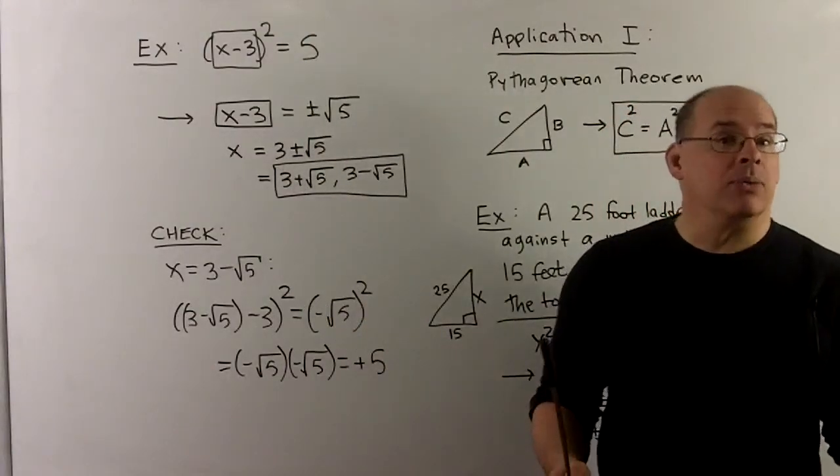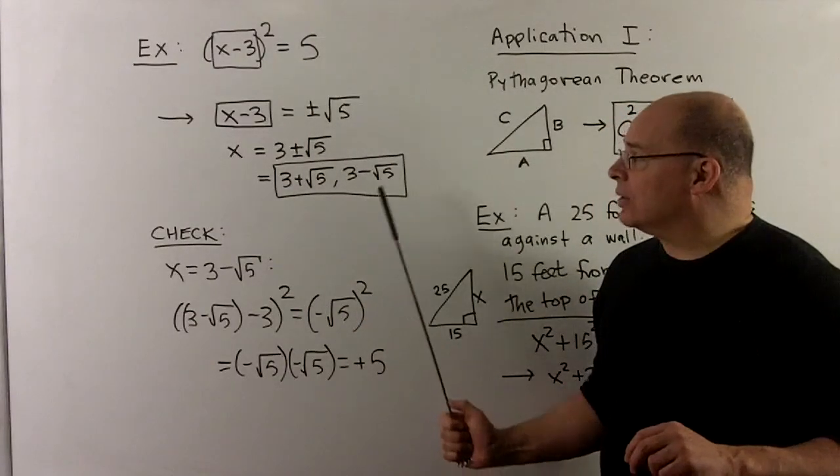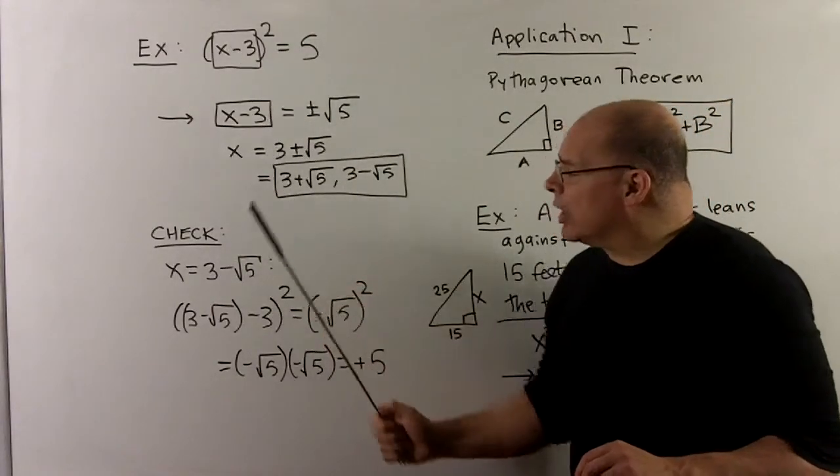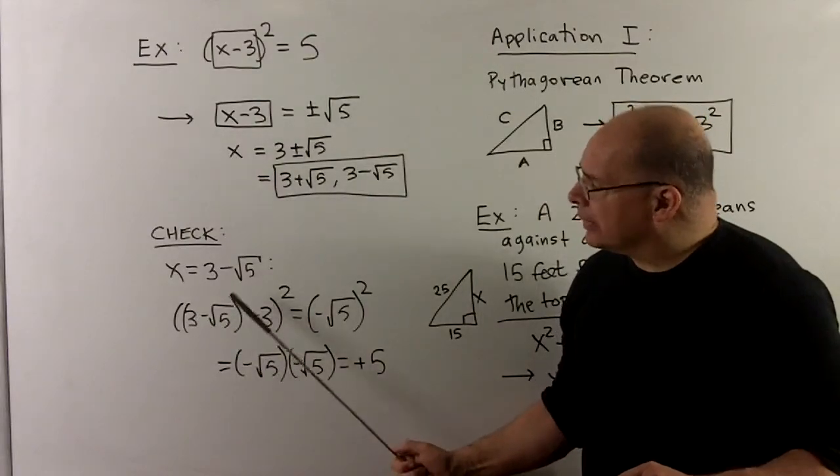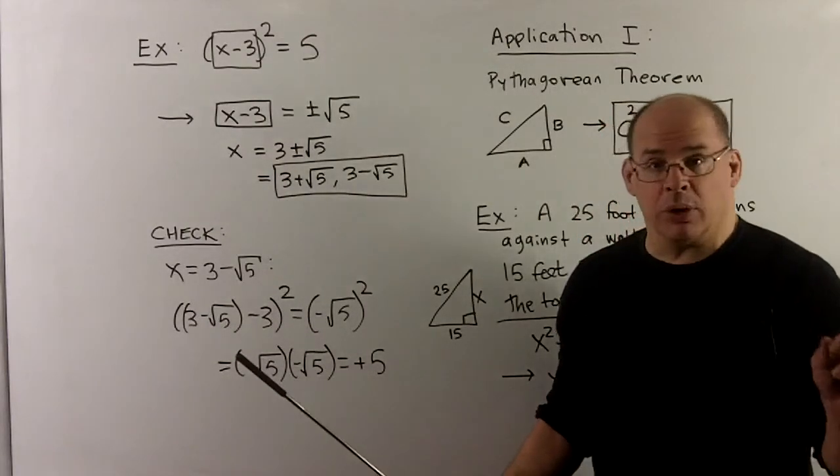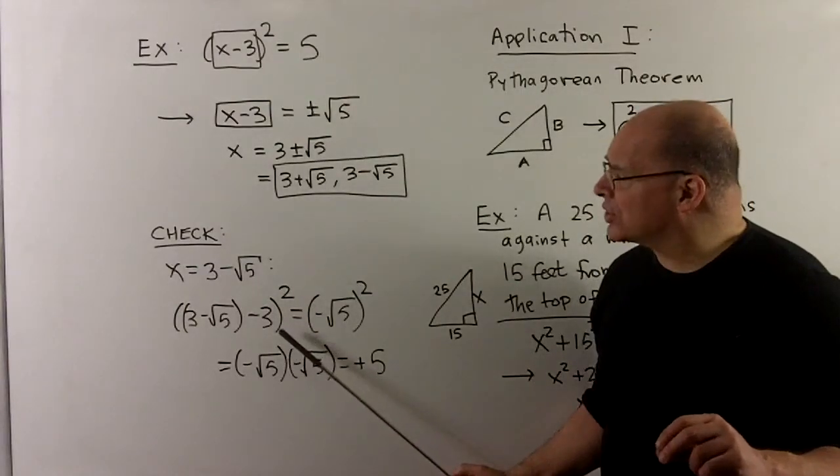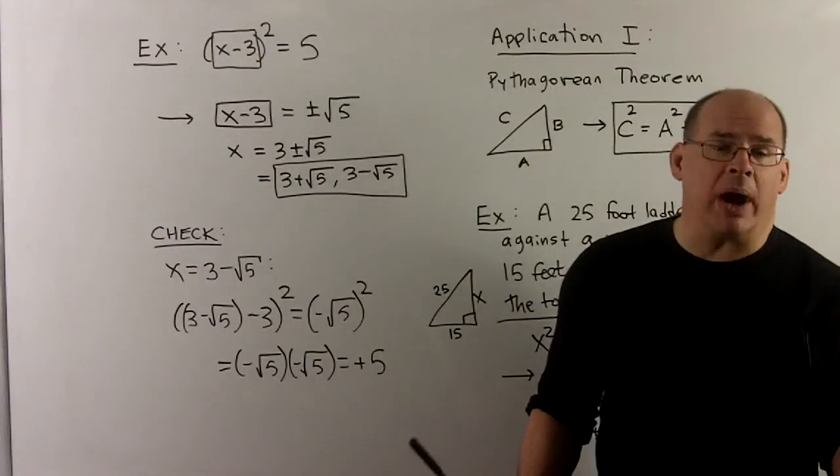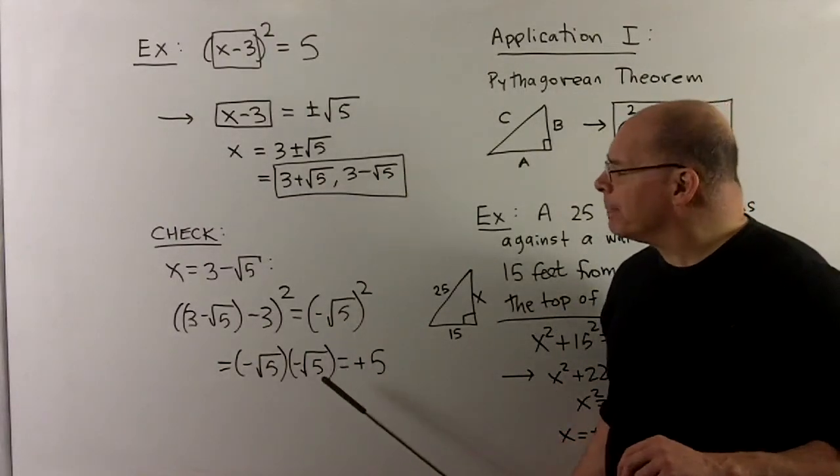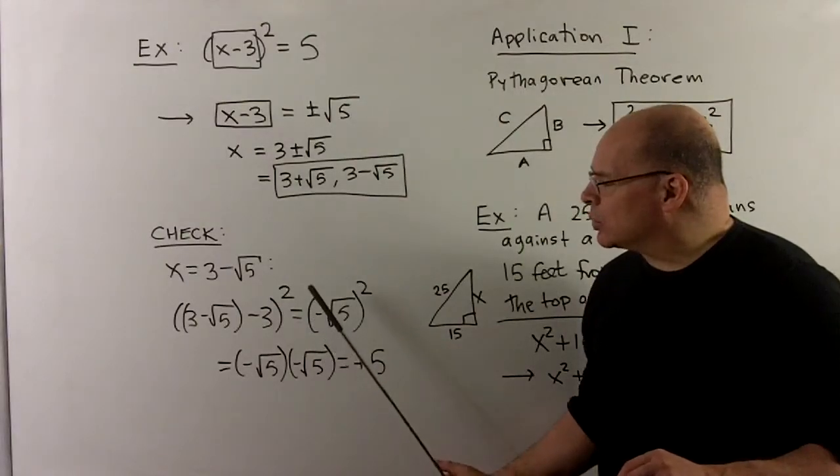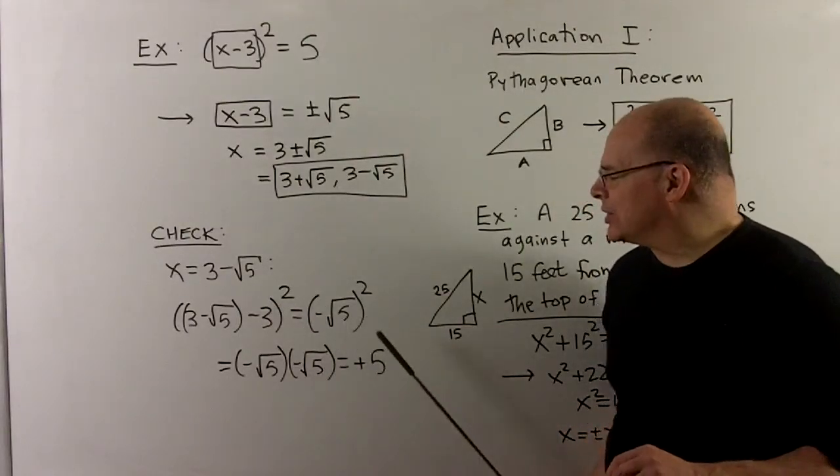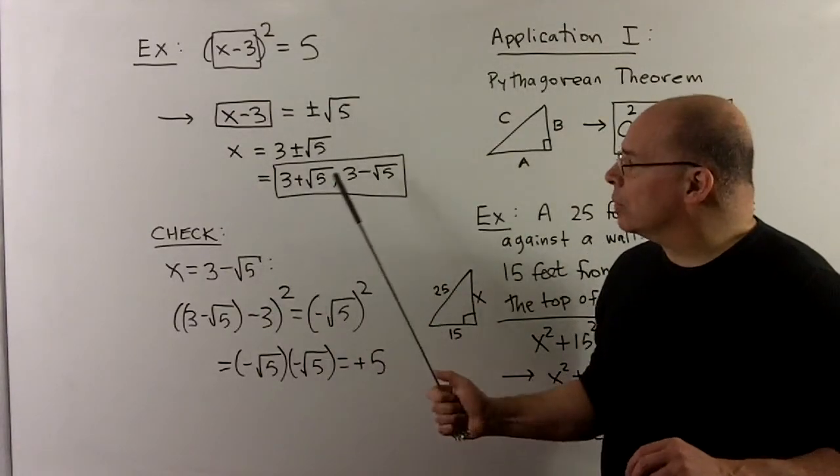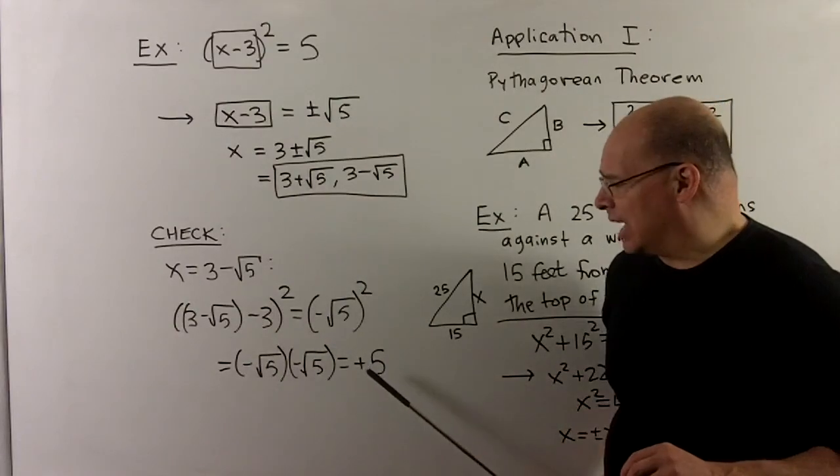Now, of course we check. I'll check one of these, the one with the 3 minus square root of 5. We put that back in the original, and what you'll notice is, on the inside, because we're doing PEMDAS now, so parentheses first, the 3's are going to go away, leaving you with a minus square root of 5. We square that, so I multiply it by itself. The negative sign goes away, leaving us with the square root of 5 times the square root of 5, which is a 5, and that's what we were looking for. Then you'll notice the other solution, the 3 plus square root of 5, goes exactly the same way.